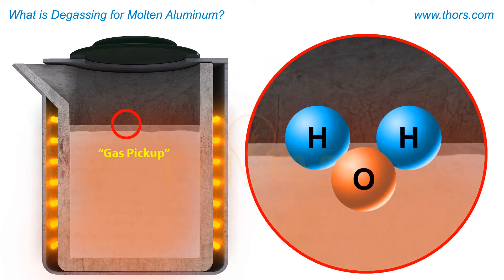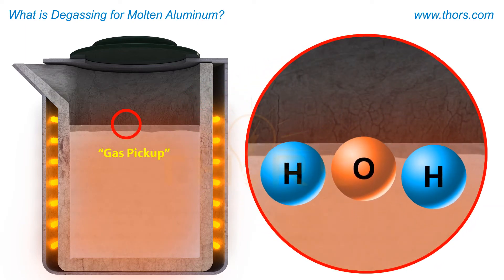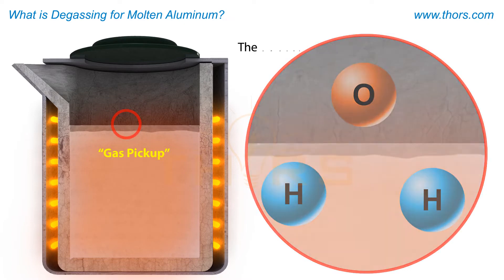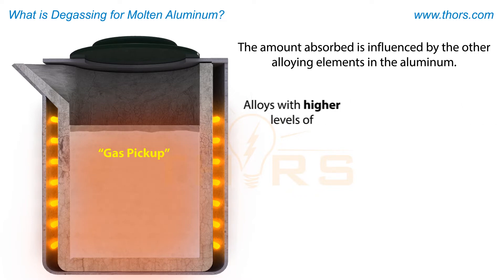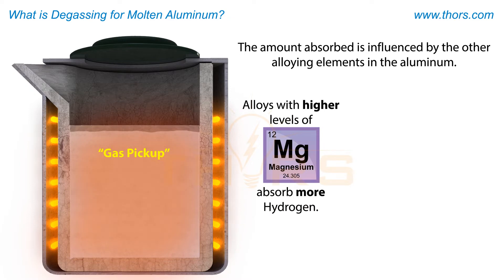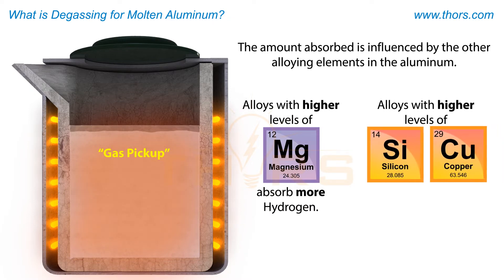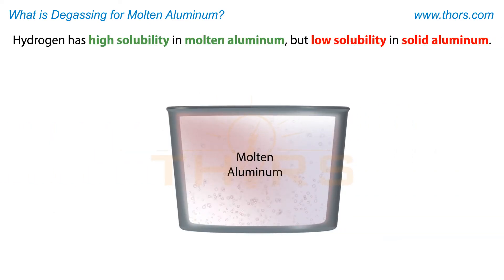When moisture is introduced to the melt, the water molecules break down and hydrogen is absorbed by the liquid metal. The amount absorbed is influenced by the other alloying elements in the aluminum. For example, alloys with higher levels of magnesium absorb more hydrogen, while those with more silicon and copper absorb less.